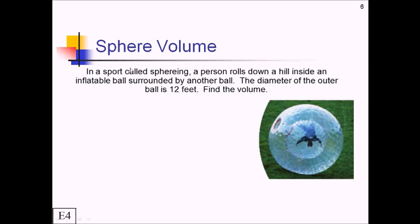For this next example, in a sport called sphering, a person rolls down a hill inside an inflatable ball surrounded by another ball. We want to find, basically given the diameter of the outer ball of 12 feet, we want to find the volume of the whole thing. So first off, this is very dangerous, please do not do this ever. Second, volume in general, we are talking about the space inside a solid. So pause the video and take a moment to look up the formula for the volume of a sphere, and then plug in what you think you need to plug in to get that volume.